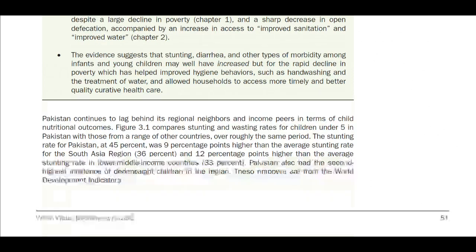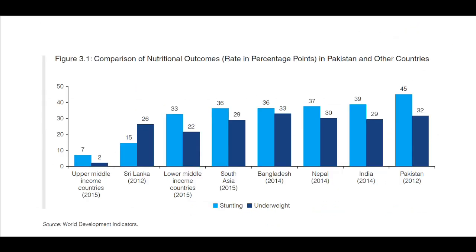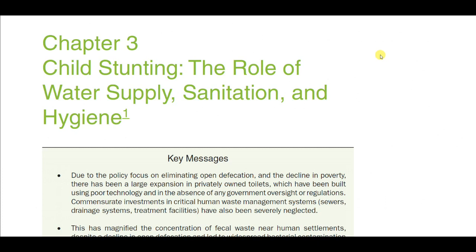There is a concept called the sanitation ladder: the bottom level is open defecation, then pit latrine, then open drains, then septic tanks, and the highest level is flush to sewer — and we want this to increase. The next chapter on child stunting and the role of water, sanitation, and hygiene I am leaving as an assignment. I will probably give a group assignment on chapter 3, and maybe chapter 4 as well, to replace the quiz.